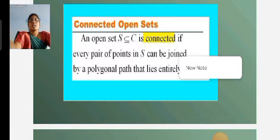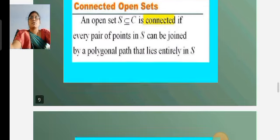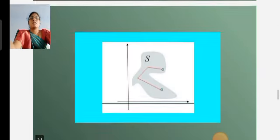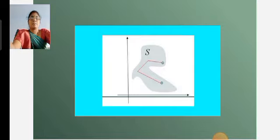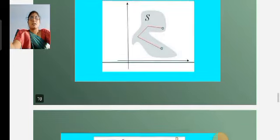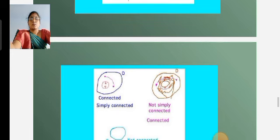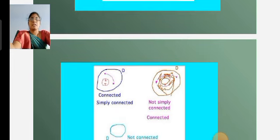A connected open set S is connected if and only if every pair of points in S can be joined by a polygonal path that lies entirely in S. We can see diagrams of connected sets.